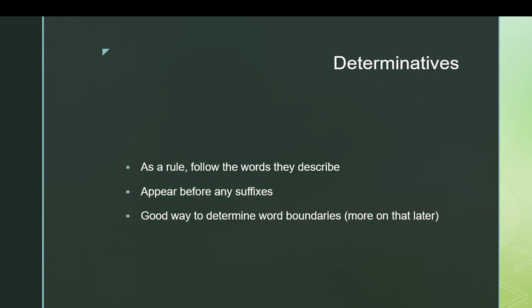As a rule, the determinatives appear before any suffixes that get tacked onto the word. Egyptian is rather fond of certain suffixes — specifically, the possessive pronouns are suffixes, and some verbs are conjugated with suffixes, that kind of thing. The determinatives are always before those.